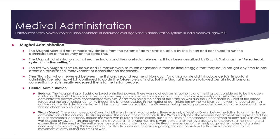Though the king was assisted in administration by ministers, he was not bound by their advice — the final decision rested with him. In short, the governor during the Mughal period enjoyed absolute power with no check on his authority. There was no regular council of ministers; there was only a Vajir or Diwan below the Sultan to assist him. He supervised the work of other officials. The Vajir usually headed the revenue department and represented the king at ceremonial occasions.